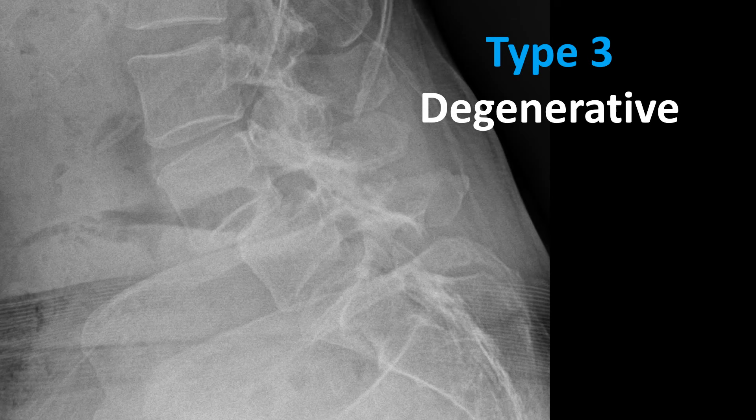The third type on the Wiltse classification is degenerative spondylolisthesis. This is due to severe long-standing degenerative arthrosis, typically moderate to severe, usually in the facet or zygapophyseal joints of the lumbar spine. That arthrosis contributes to the anterior translation. Here is an anterolisthesis of L4 with severe facet arthrosis posteriorly, and the entire L4 vertebral segment — including the spinous process — has moved anteriorly.